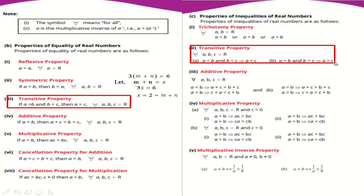Inequality میں Transitive Property: اگر a < b اور b < c، تو a < c۔ اسی طرح greater than میں بھی یہی بات ہے۔ تو inequality میں two cases آتے ہیں — less than اور greater than — اور دونوں میں Transitive Property کام کرتی ہے۔